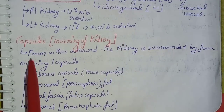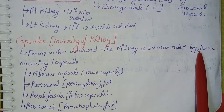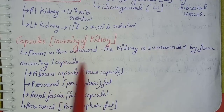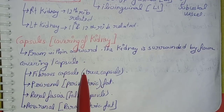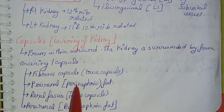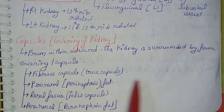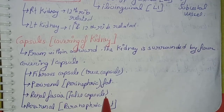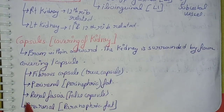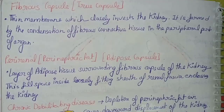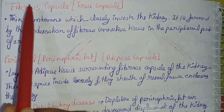Coming to the capsules or coverings of the kidney: from within outward, the kidney is surrounded by four capsules — the fibrous capsule (true capsule), perirenal or perinephric fat (adipose capsule), renal fascia (false capsule), and pararenal or paranephric fat.